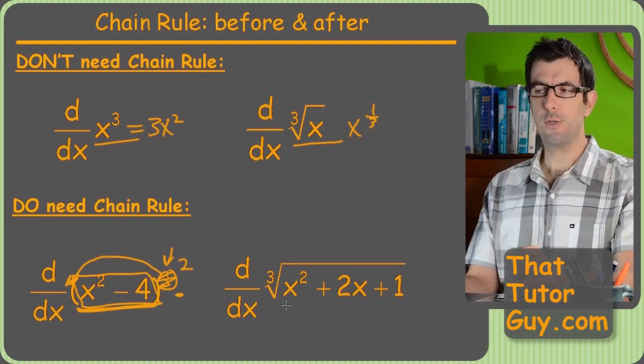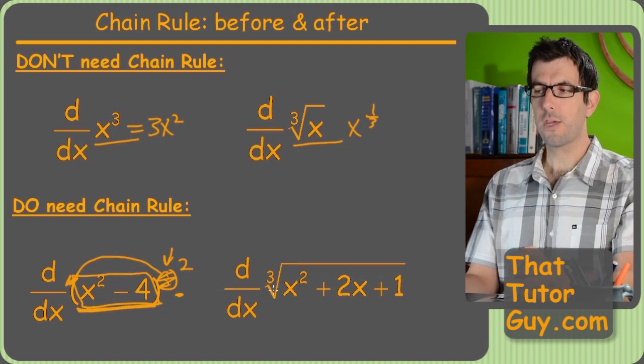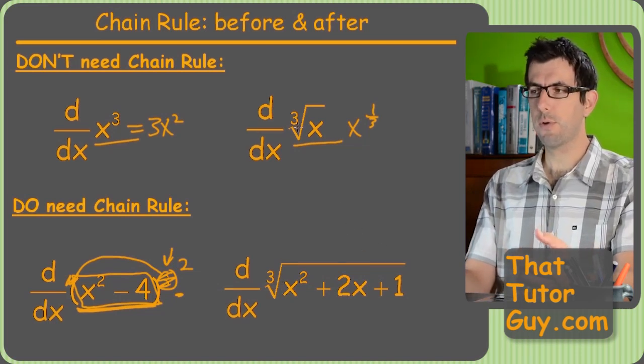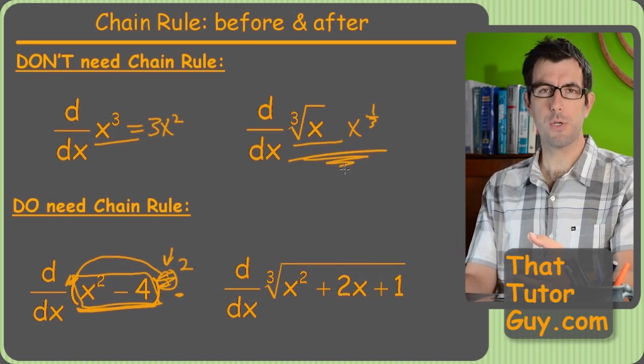Same thing here. Here's another one we could not do before the chain rule. We've got a cube root which we already knew how to take the derivative of, right? We did one right up here. That's just a typical cube root also.